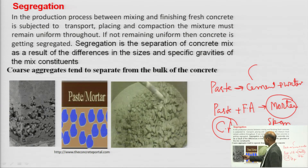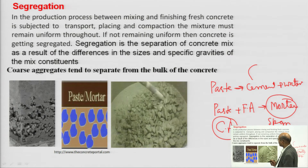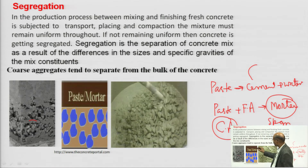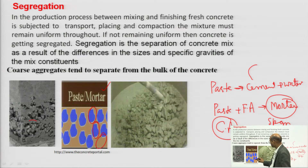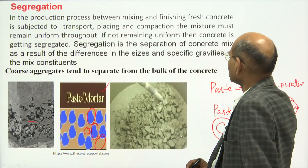In this case, coarse aggregate has got settled at the bottom. This may happen during transport due to jolting action, or during placing when vibration is applied. If your mix is not uniform, it has a tendency of getting settled. The top portion has paste and mortar, while the bottom has coarse aggregate with some air gaps. This coarse aggregate got separated, which is a case of internal type of segregation.